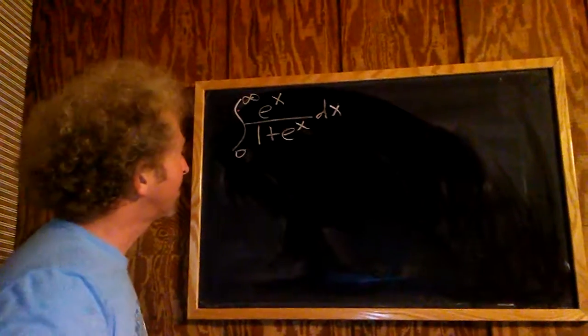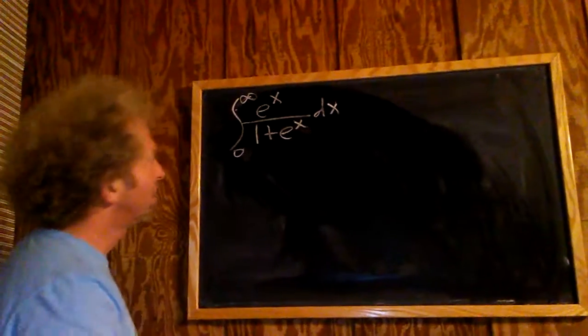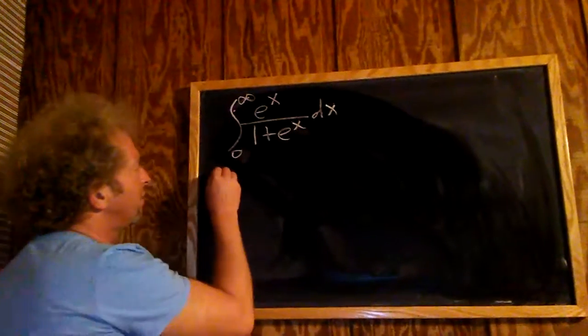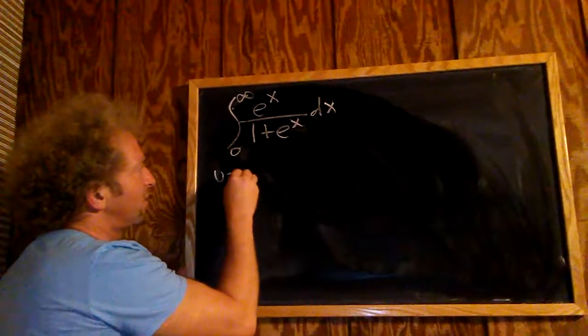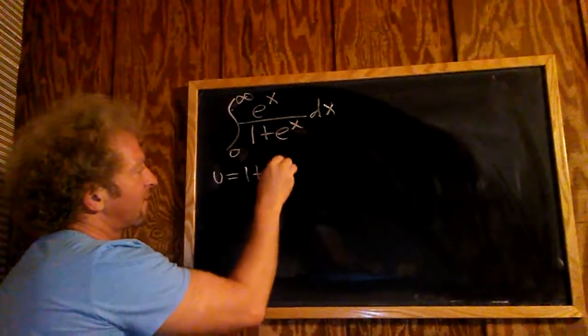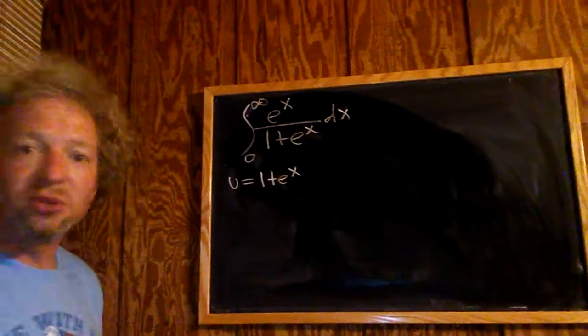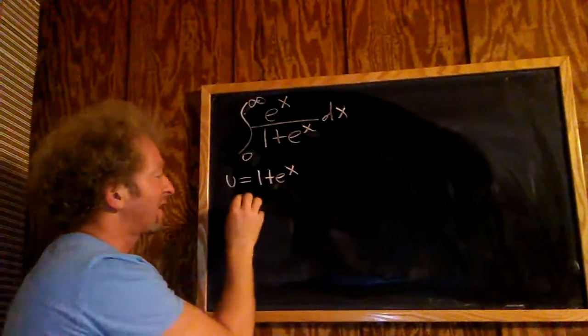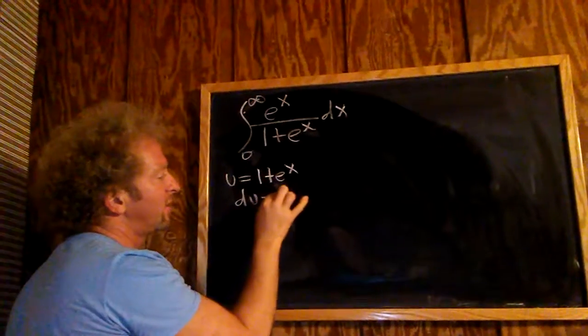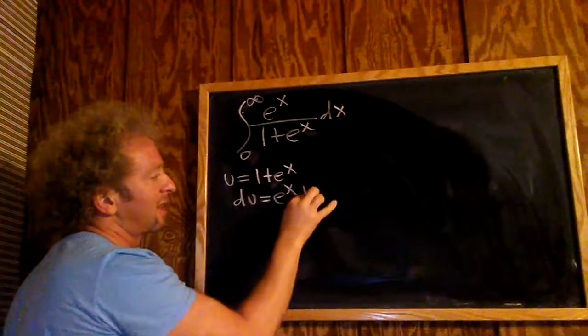Okay, so to integrate this, we have to make a u substitution. So we'll start by letting u be equal to 1 plus e to the x. And then du, well the derivative of e to the x is e to the x. So du will be equal to e to the x with respect to x.